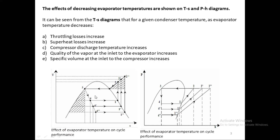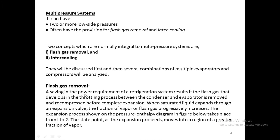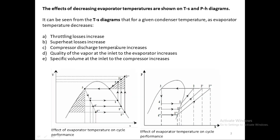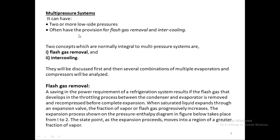So what do we do? We want to introduce probably one more device. In a multi-pressure system, two or more low-side pressures may be present — one low-pressure evaporator and one high-pressure evaporator. Often the system will also have provision for flash gas removal and intercooling. We are going to add one more device into our regular vapor compression system — we call it a flash tank — to remove flash gas.